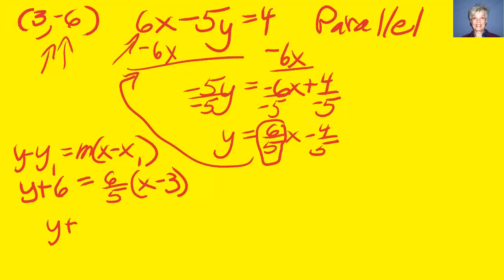y plus 6 equals 6 fifths x minus 6 over 5 times 3, which you can always put in your calculator. And what you ought to get is y plus 6 equals 6 fifths x minus 18 fifths.